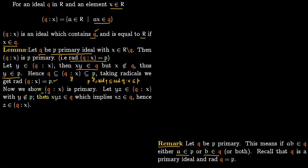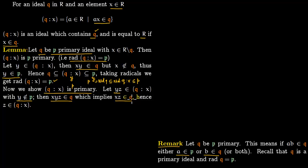The second thing we want to show is that Q/x is primary. Suppose YZ lies in Q/x with Y not lying in P. We need to show Z lies in Q/x. Since YZ is in Q/x, by definition XYZ lies within Q. Since Y does not lie in P, by the primary property XZ must lie in Q. But XZ lying in Q immediately implies Z lies in Q/x by definition. That is what we wanted to show.